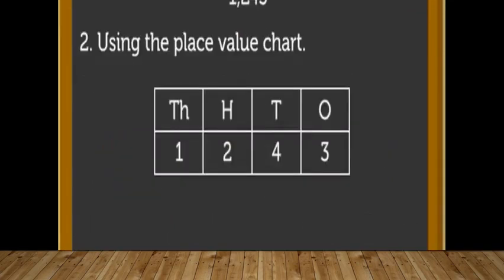The second way is 1243. This can be done by using the place value chart. In the place value chart, digit 3 is placed in the ones place, digit 4 in the tens place, digit 2 in the hundreds place, and digit 1 in the thousands place.